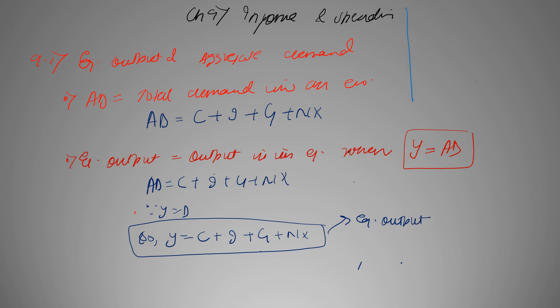Now we have another concept which is unplanned inventory which is represented by IU. What is unplanned inventory? Unplanned inventory is when your output is more than demand or you have to keep some stock which is unsold somewhere.